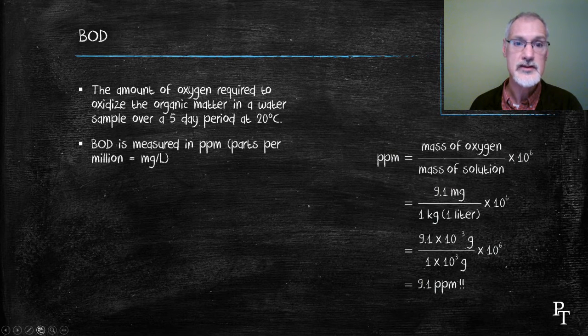BOD is measured in parts per million, which happens to be equal to milligrams per liter. 9.1 parts per million equals 9.1 milligrams per liter. And you can see the math proved here down below.